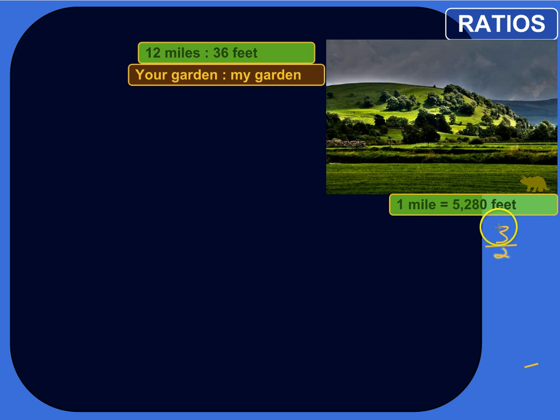And then you can have ratios with measurements in them. So for example, here's kind of a silly example. Pretend like you have a garden that's 12 miles long, and I have a garden that's 36 feet long. So if we were to write a ratio of the size of your garden to mine, it would be like that, 12 miles to 36 feet.